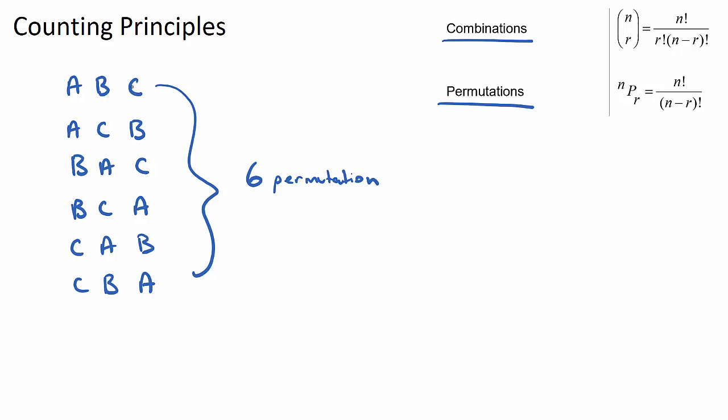Now what a combination is, is a combination is the same as a permutation except the order doesn't matter. So if I were to say to you how many ways could you order A, B, C but the order doesn't matter, well there's only one way, it's just A, B, C. So A, B, C and A, C, B, these two here, these are two different permutations but they're the same combination. So combination is where the order doesn't matter, permutation is when the order does matter, so they are different.